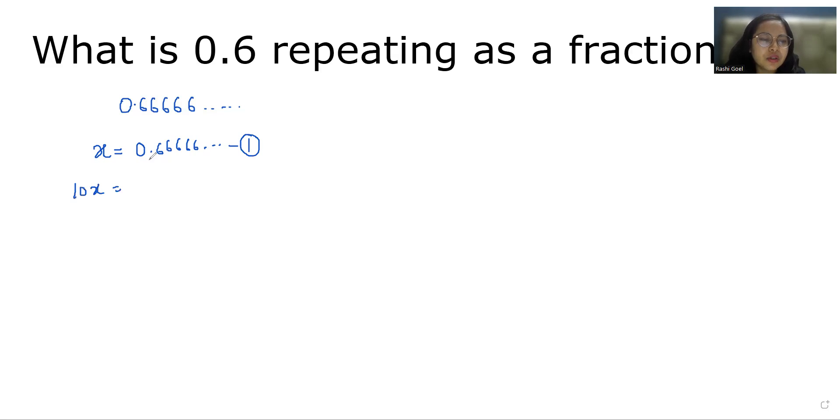So 10x equals, after multiplying by 10, it becomes 6.6666 and so on. Now this is our equation number 2. Now I'm going to subtract equation number 1 from equation number 2.